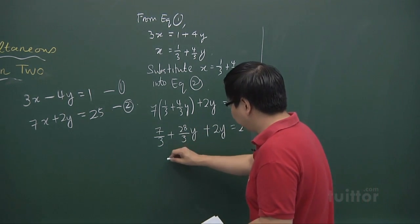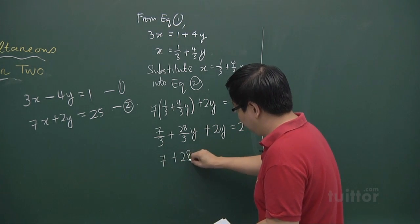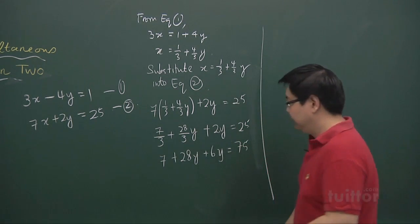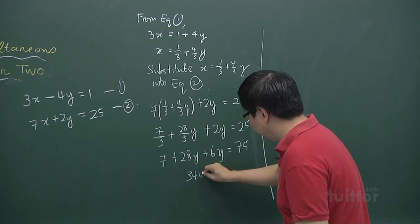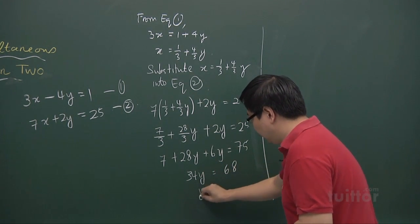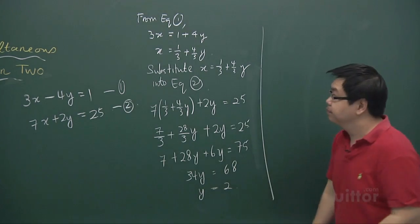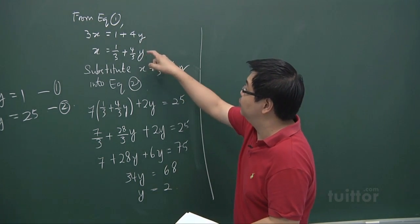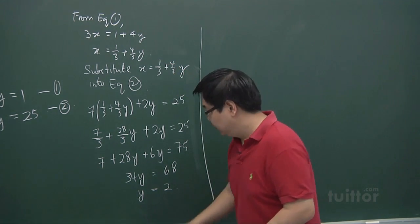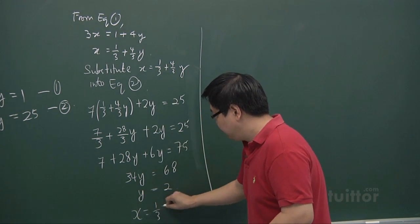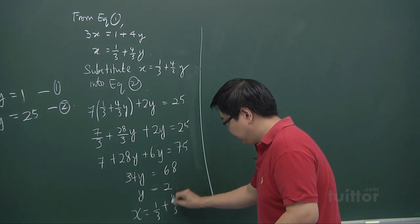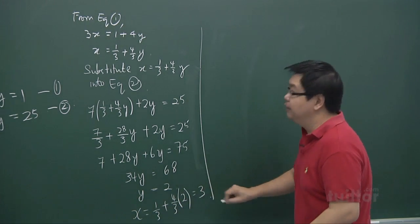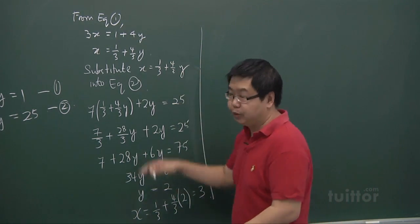Multiplying throughout by 3, we get 7 plus 28y plus 6y equals 75. So we have 34y equals 68, and y equals 2. After finding the y value, substitute back into the equation: x equals 1 third plus 4 over 3 times 2, which gives x equals 3. This is the substitution method applied to the second example.